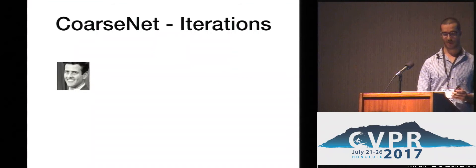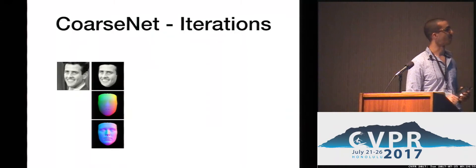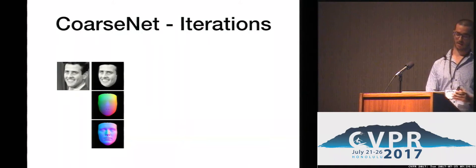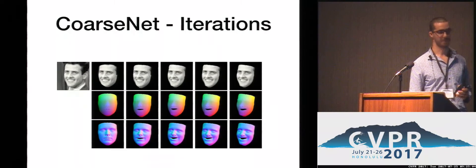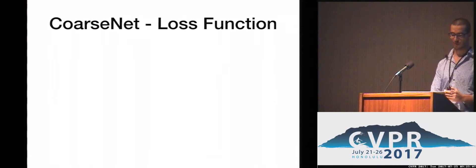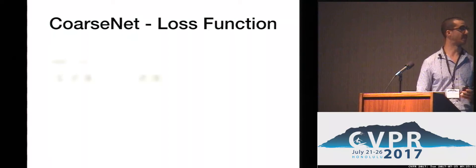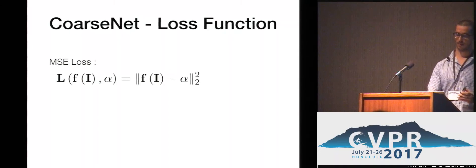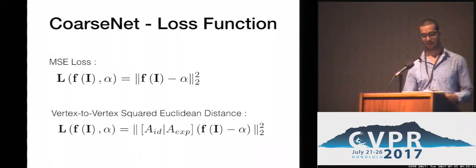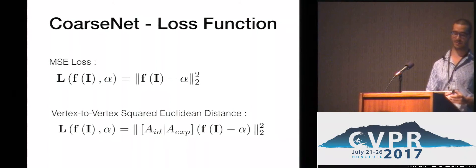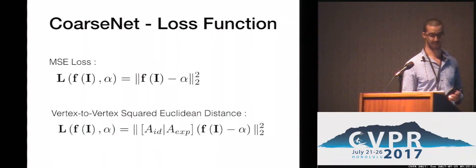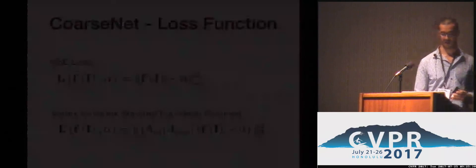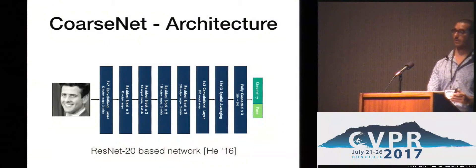Given a facial image, we place a frontalized average face at the center of it and crop it according to its silhouette. We run the network multiple times until convergence. A naive approach to train coarse-net would be to minimize the MSE loss in the representation space. Instead, we propose to minimize a sum of Euclidean distances between corresponding vertices, which penalizes the deviation between the reconstructed and ground truth geometry. The architecture of coarse-net was ResNet-20.